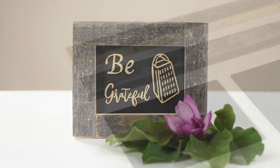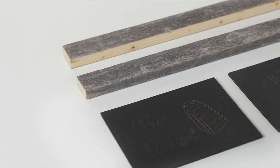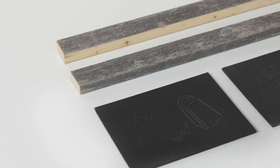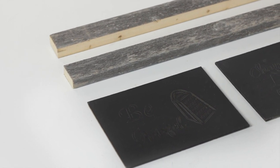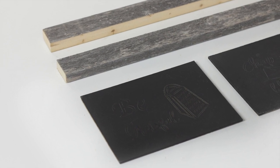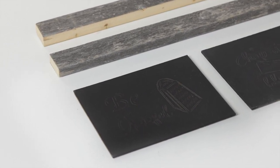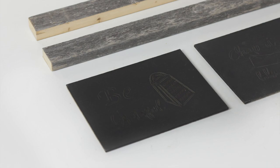Our materials for this class include 1x2 barn boards to create the frame of the sign, and hardboard prepped with a coat of black paint with an outline design to create the interior portion of the sign. We also have blank boards if you'd like to try free handing your own design.